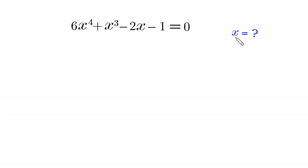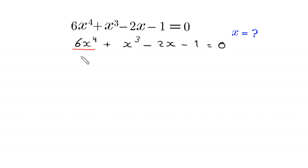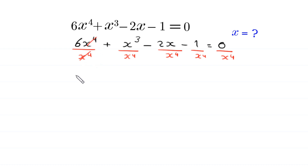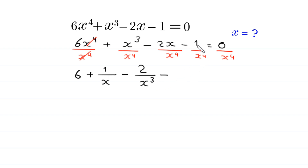Let's start by dividing both sides of this equation by x⁴. We have 6x⁴ + x³ - 2x - 1 = 0, and we divide each term by x⁴. The x⁴ terms cancel, leaving 6 plus x³/x⁴ which becomes 1/x, minus 2x/x⁴ which becomes 2/x³, minus 1/x⁴.